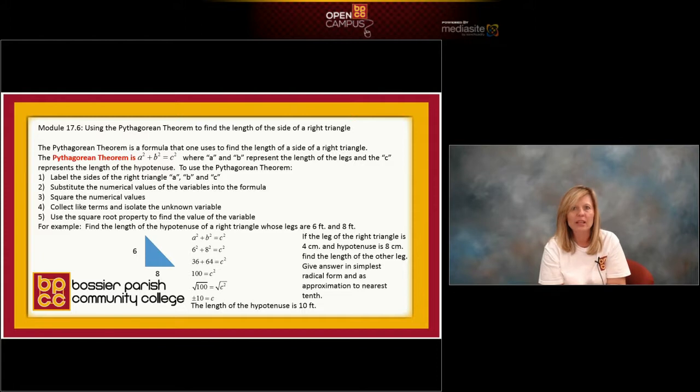But because it's a real-life problem, it's application, it's finding a missing side of a right triangle, we know a missing side would never be a negative number. Have you ever measured anything that's negative? No, there aren't rulers. There are no negative numbers. So, we would say the length of this hypotenuse is 10 feet. We only give the positive answer when working with the Pythagorean theorem.